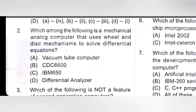Which among the following is a mechanical analog computer that uses wheel and disk mechanism to solve differential equations? Vacuum tube computer — not correct. CDC 6600 — not correct. IBM 650 — also wrong. Differential Analyzer is the right option. Maximum questions are learning based, so you can relate to Differential Analyzer.